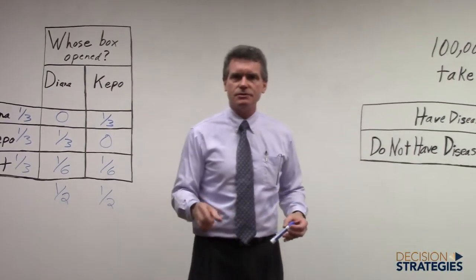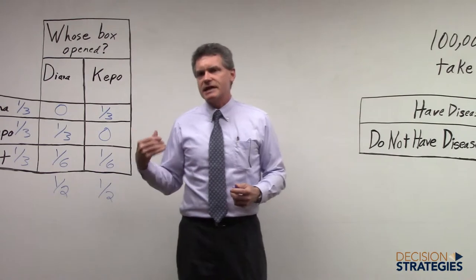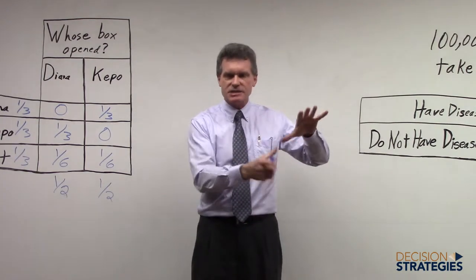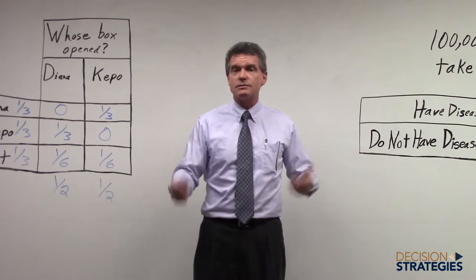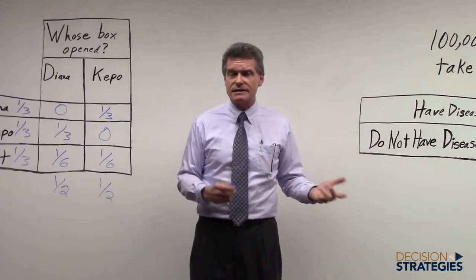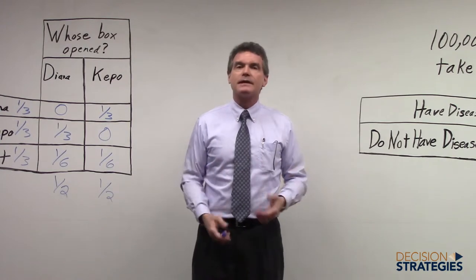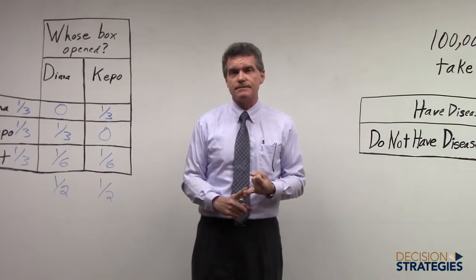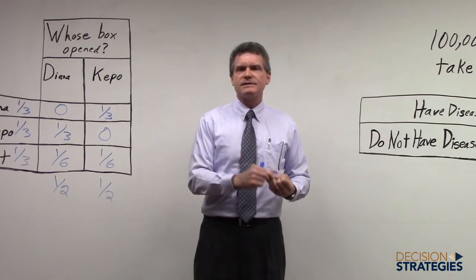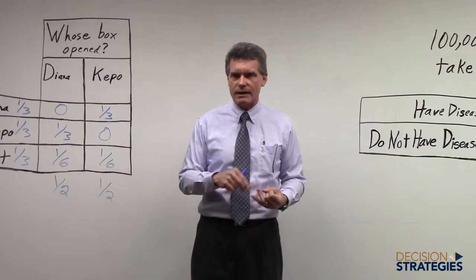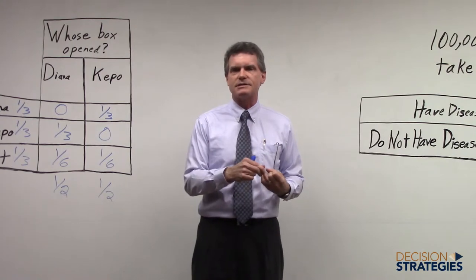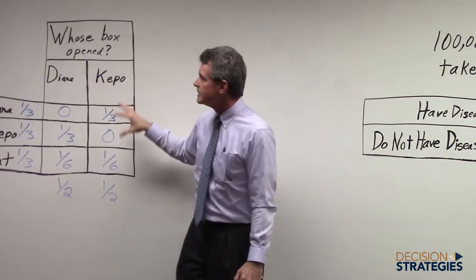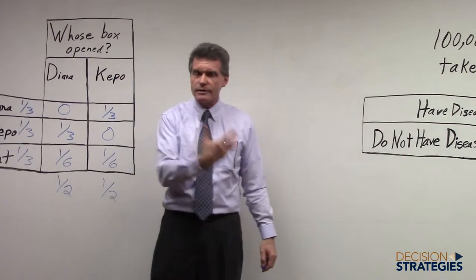Another reason we wanted to do this problem is it's not just the game show problem. This type of thinking is how you incorporate new information whenever you're in a situation where you're trying to estimate the probabilities of things happening and you get new information which causes you to update those probabilities. A lot of times those circumstances aren't as trivial as game shows. For instance, if you go in and have a blood test done for a disease which is rare but very serious, the probability of you getting a positive test result depends upon whether or not you have the disease — not the other way around. Whether you have the disease doesn't depend upon whether or not you have a positive test result. Just as over here, whose box was opened depended upon who had the prize, not the other way around. So it's important to set the problem up correctly.